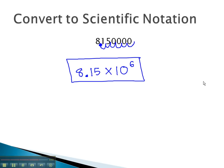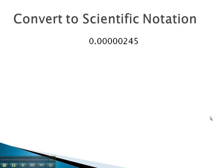Let's try one more. This problem, you notice, is very small. This means we will have a negative exponent on the 10. The decimal needs to go after the first significant digit, so we have 2.45 times 10 to the negative, because it's a small number.